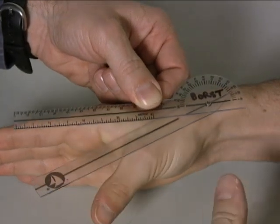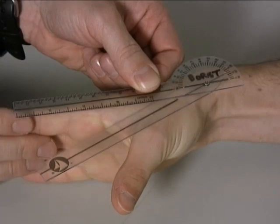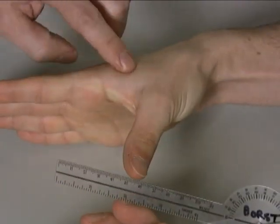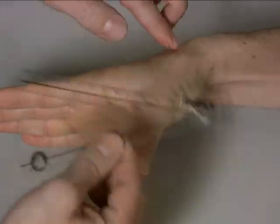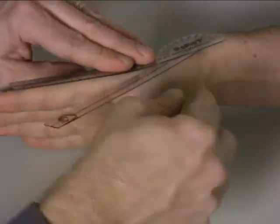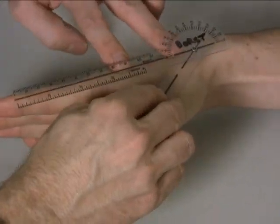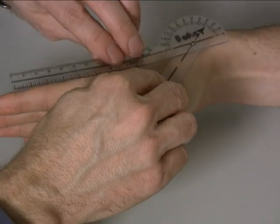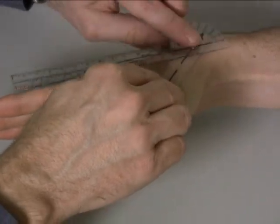Then I have you bring your thumb way down, pointing away from your palm as far as it can point. Again, palpate the index metacarpal, palpate the thumb metacarpal. Where those two rays intersect is where your axis is going to be.